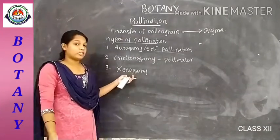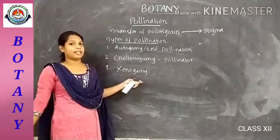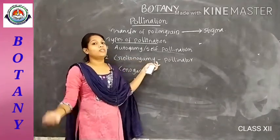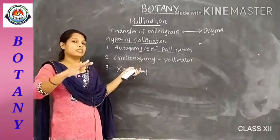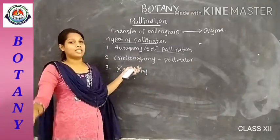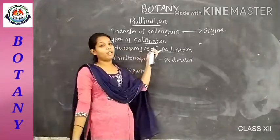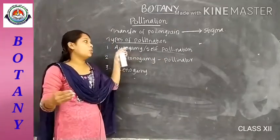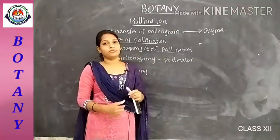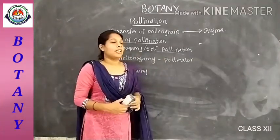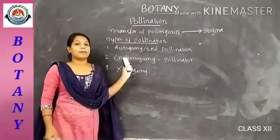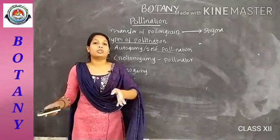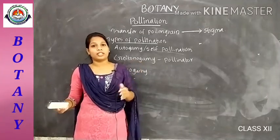Xenogamy occurs between different plants, whereas geitonogamy occurs within the same plant but between different flowers. In autogamy, the same flower carries out the pollination. That is all about the different types of pollination. Now we are moving on to the agents of pollination — the agents which carry out pollination.